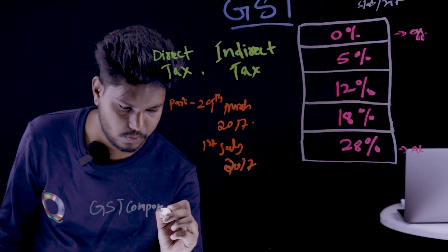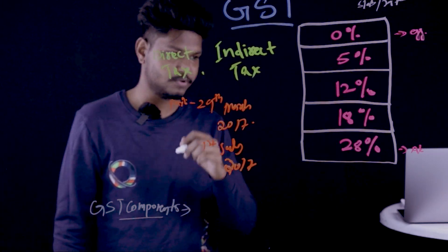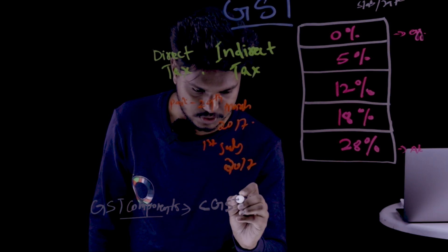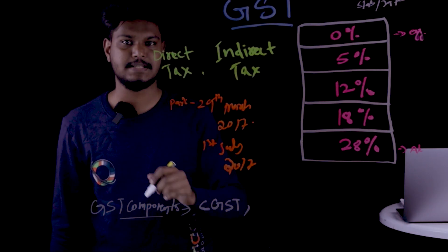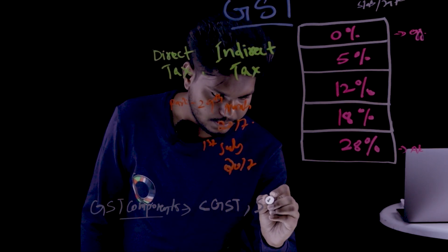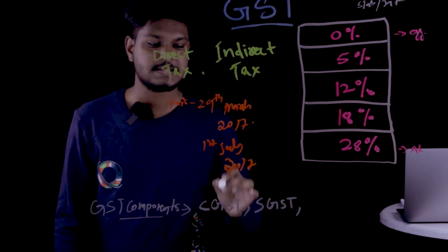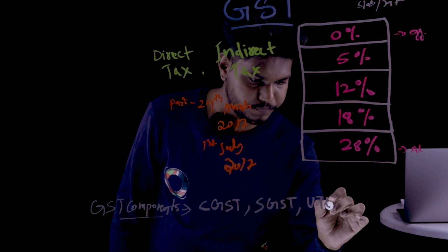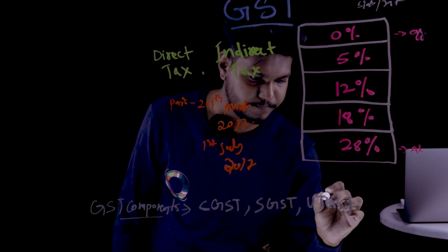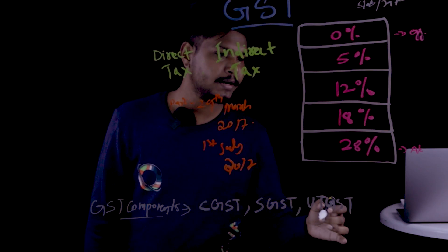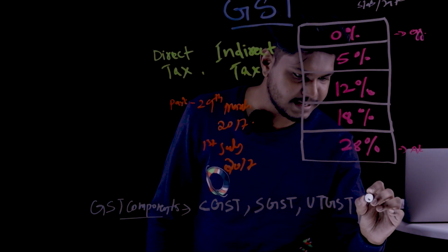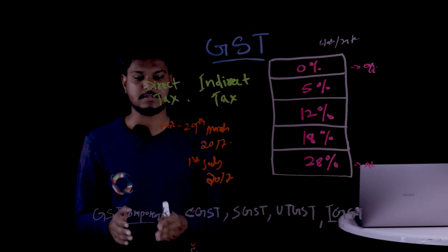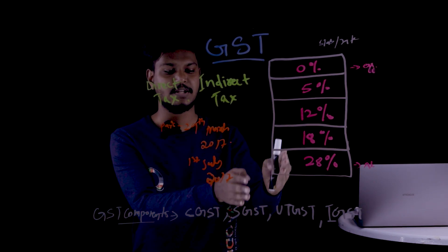GST has different types of components. There are 4 types of GST components: CGST (Central GST), SGST (State GST), UTGST (Union Territory GST), and IGST (Integrated GST).